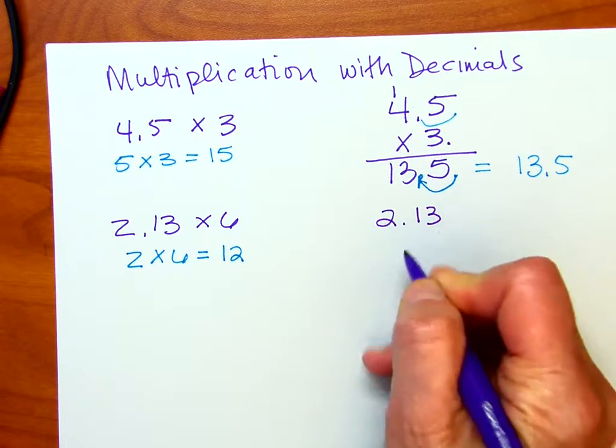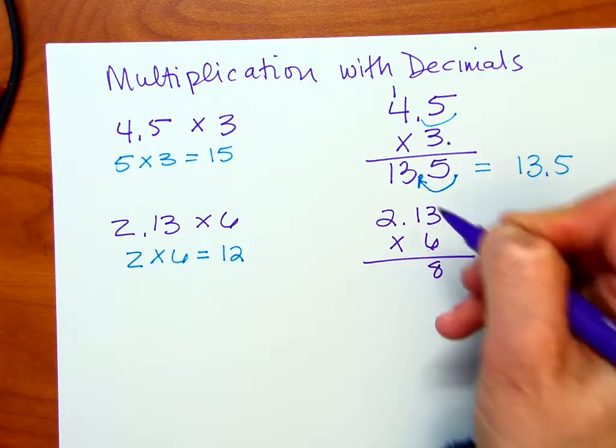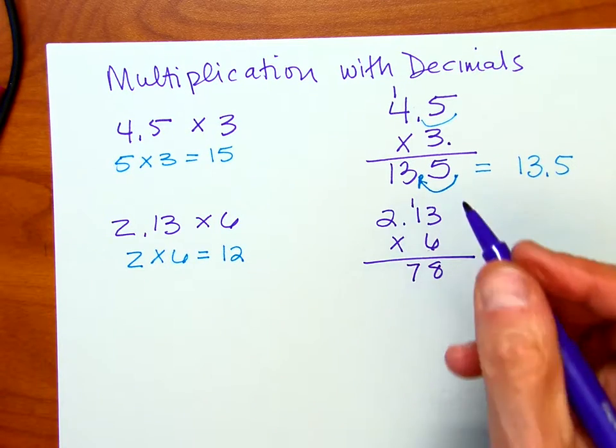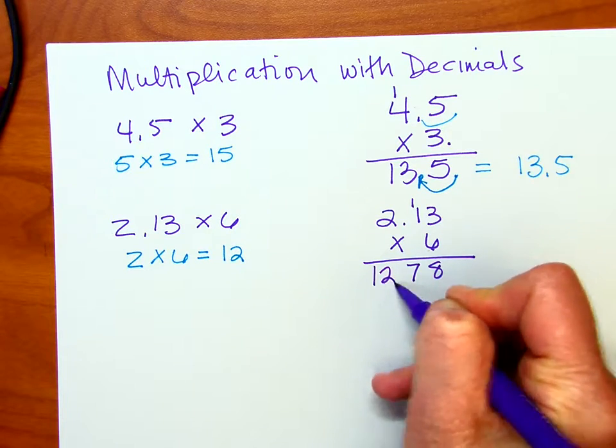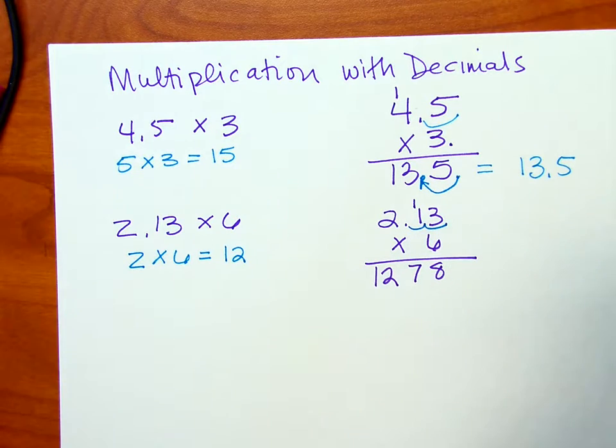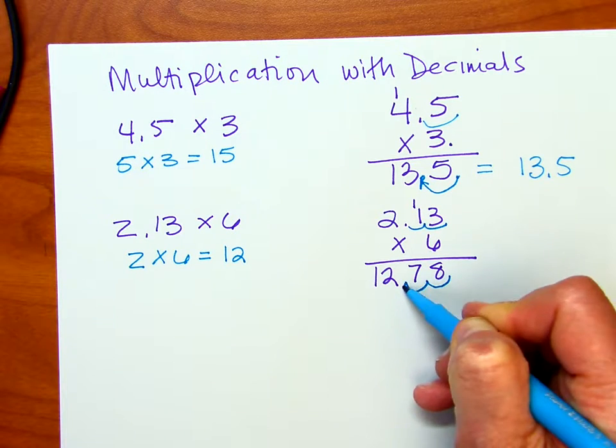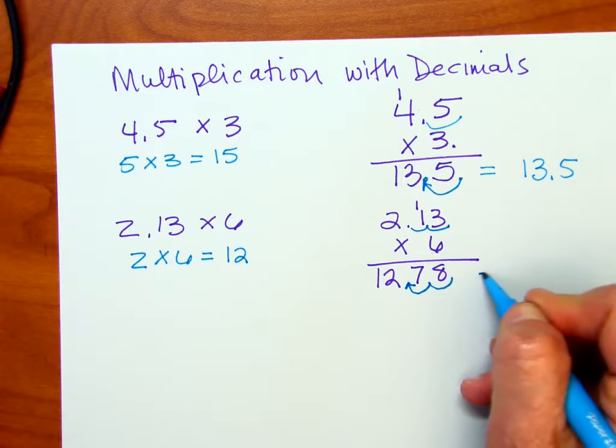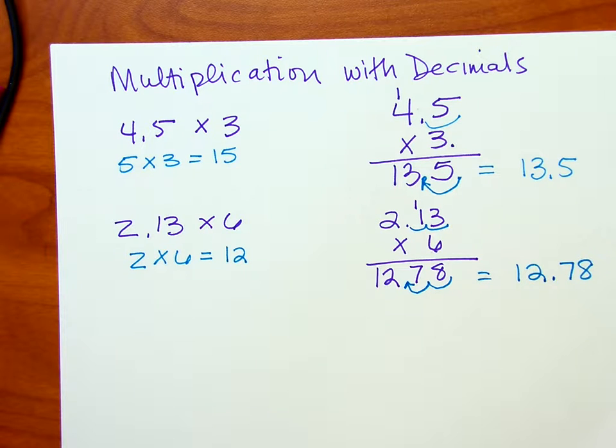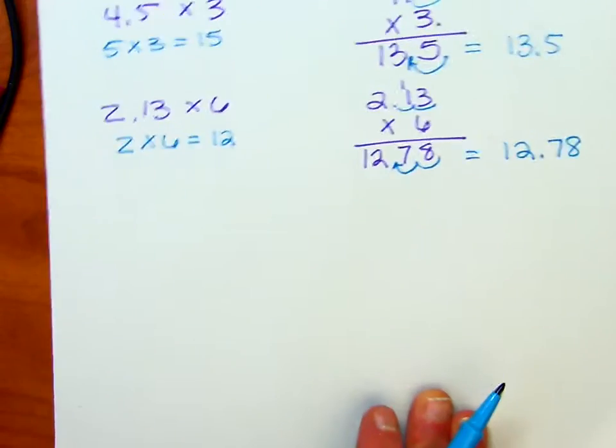2.13 times 6. 6 times 3 is 18, carry the 1. 6 times 1 is 6, plus 1 is 7. And 6 times 2 is going to be 12. In this problem, you can see the factor has 2 decimal places. So I need to make sure that my answer also has the 2 decimal places. My answer is going to be 12.78. And that's pretty close to what my estimate was going to be. Let's do a few more.